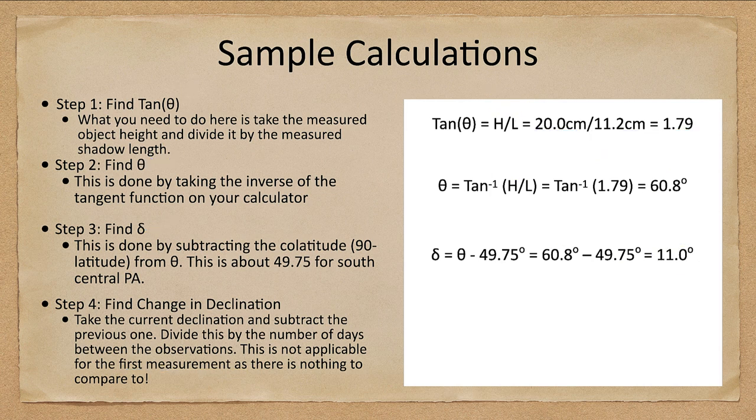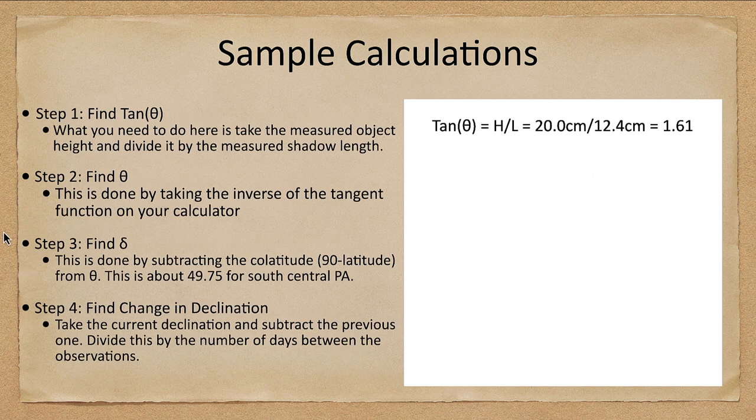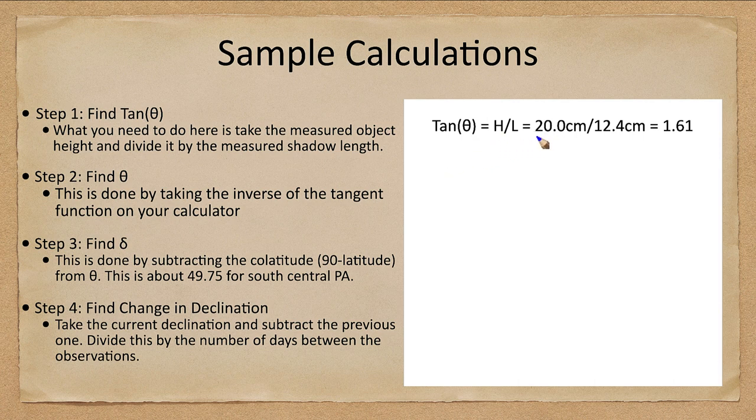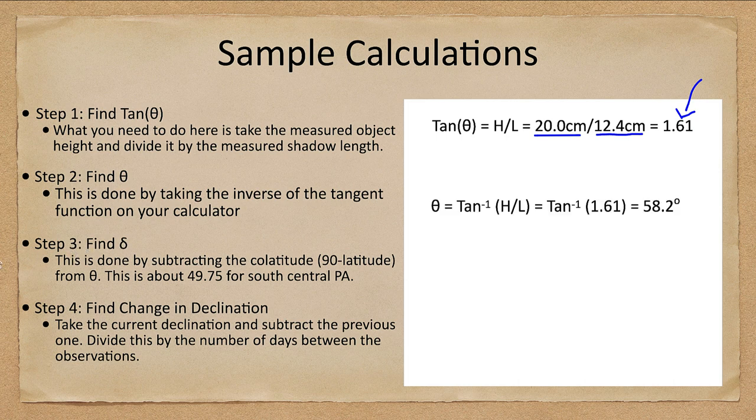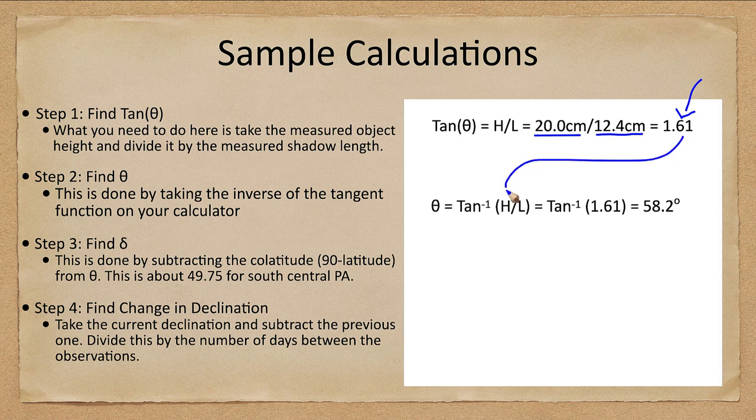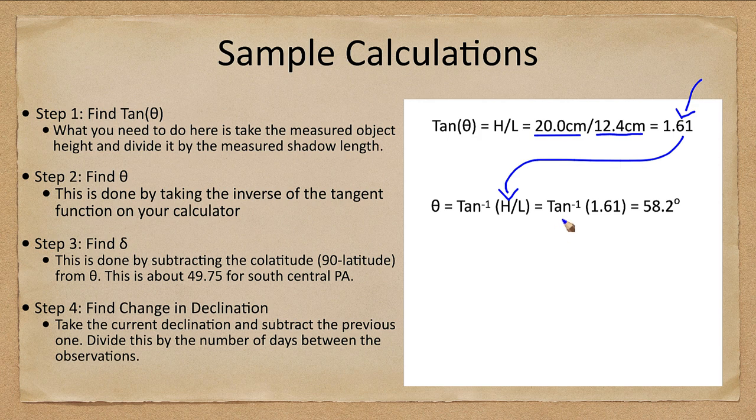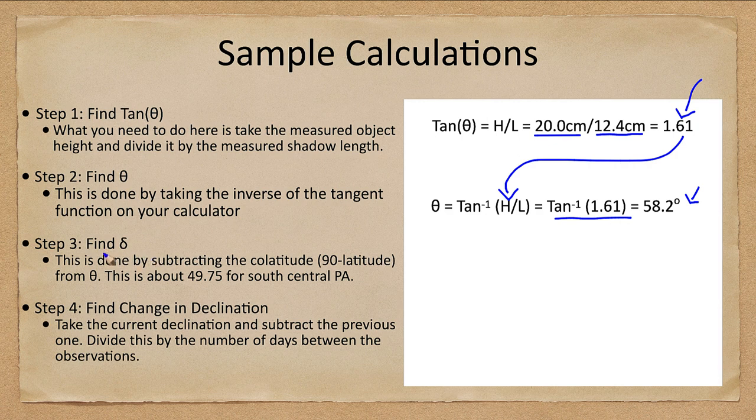Let's do this again. We're going to find tangent of theta for the next row, so it's 20 centimeters divided by 12.4 centimeters, which gives us 1.61. Now we want to find the altitude, and that is done by taking the inverse tangent of this number. The inverse tangent of that becomes 58.2 degrees. So the sun is a little bit lower - this is a week later, the sun is a little bit lower in the sky.